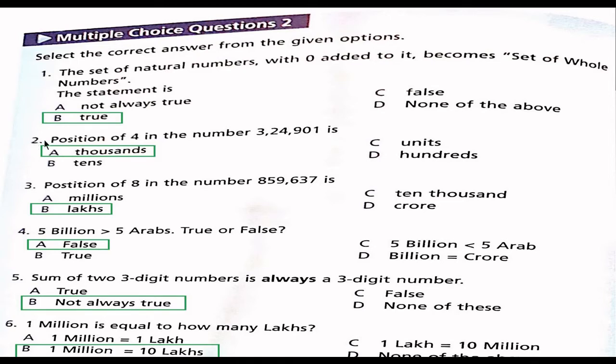Question 2: Position of 4 in the number 324,901 is option A thousands, option B tens, option C units, option D hundreds. Option A is the right answer. It is situated at thousands place.